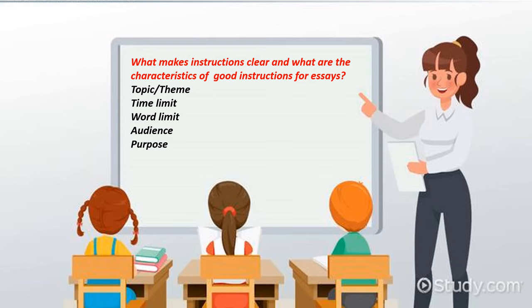Listen. The first one is topic or theme — it's important to state the theme of the topic. The second one is time limit — you should tell how much time they need: 20 minutes or 30 minutes. The third one is word limit — you should tell how many words should be in their writing. The fourth one is audience — we need to tell about the audience, for example when they are writing a letter to someone. And the last one is purpose — this is also important and we will learn this part in detail later.